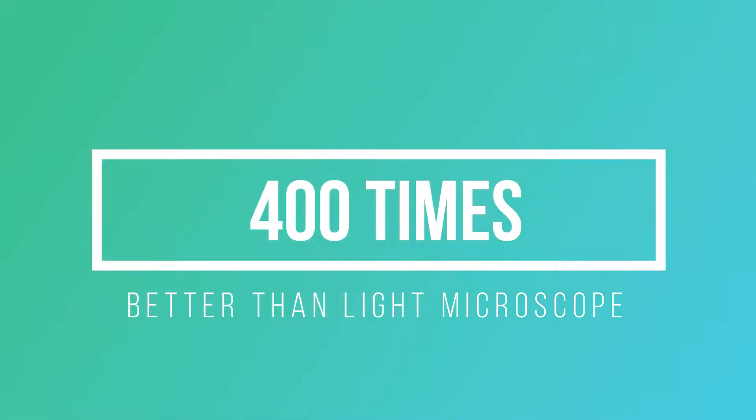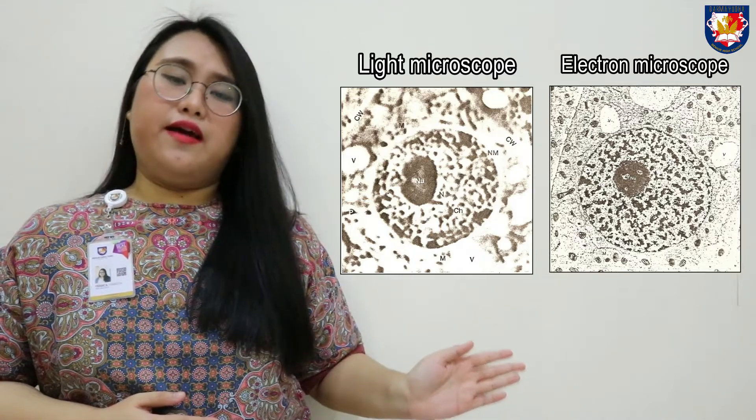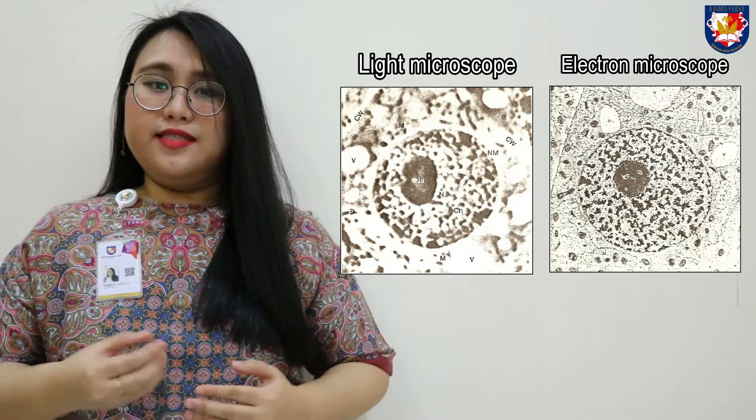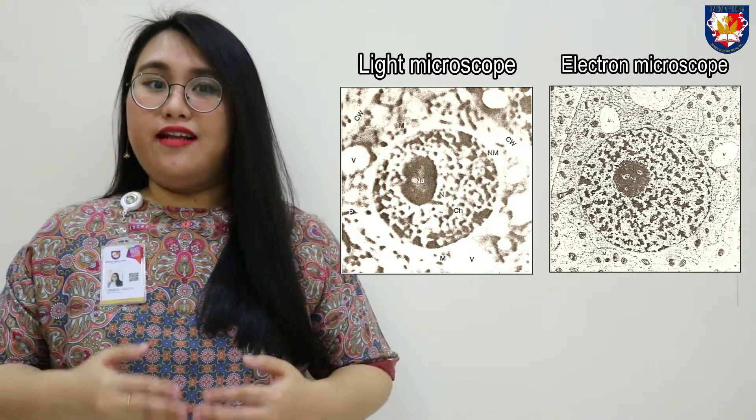Using the electron microscope, a resolution of 0.5 nanometers can be obtained, which is 400 times better than the light microscope. Looking at this picture, you can see a specimen viewed under both the light microscope and the electron microscope. The specimen seen under the electron microscope is much clearer because the electron microscope has a better resolution than the light microscope.